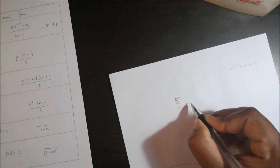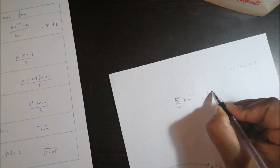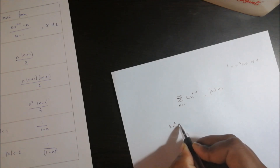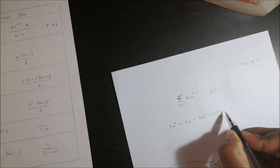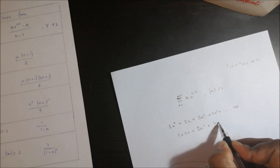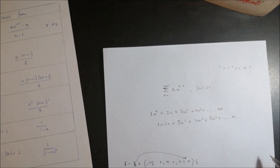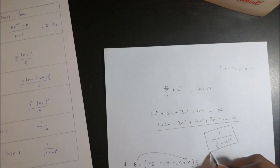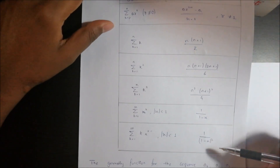This series — summation of k equals 1 to infinity of k·x^(k-1) where x < 1 — expands as x^0 + 2x + 3x² + 4x³ + ... which is 1 + 2x + 3x² + 4x³ + 5x⁴ + ... to infinity. The closed form of this series is 1 upon (1 minus x)². From the first to the last, you have to remember all the closed forms.